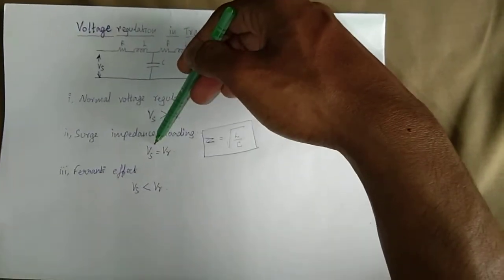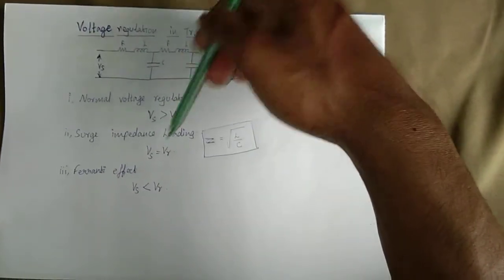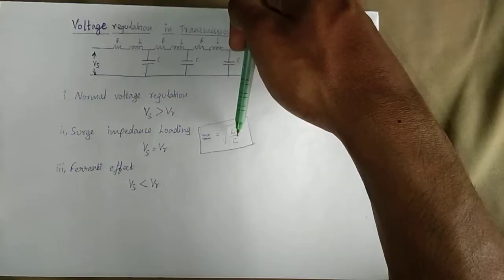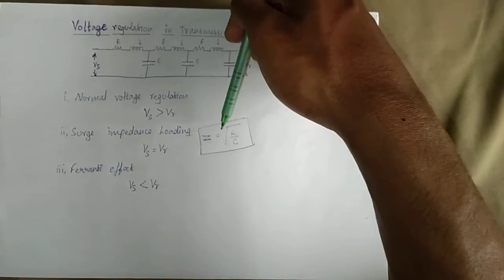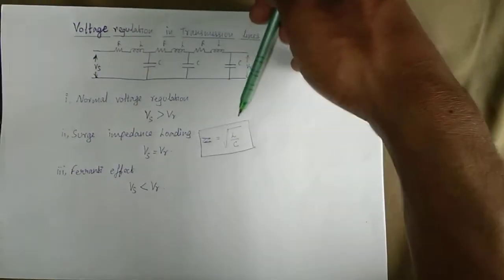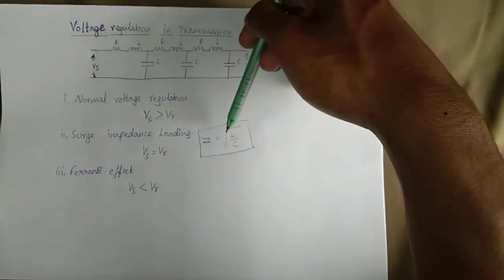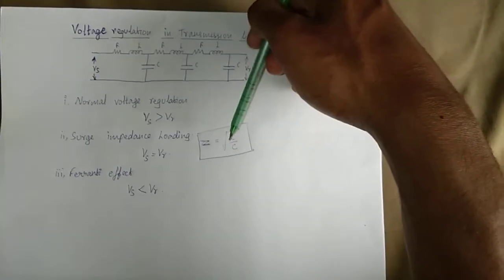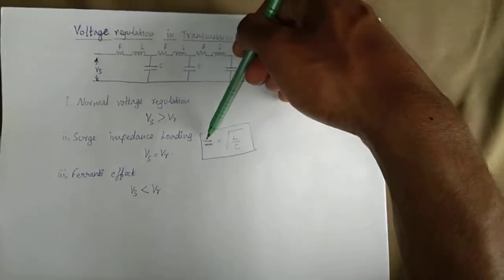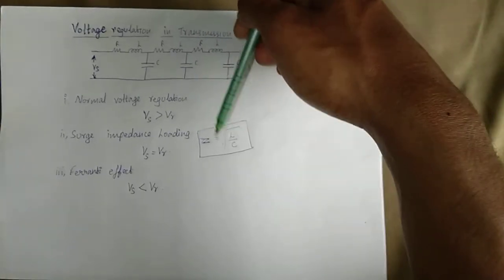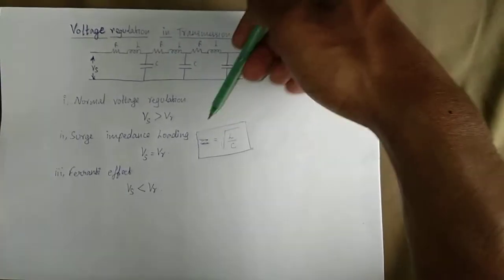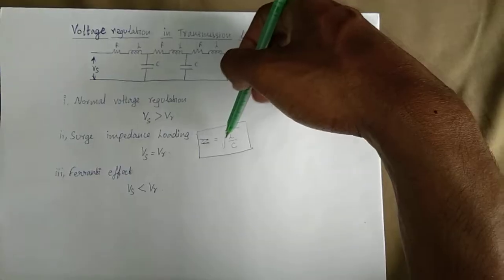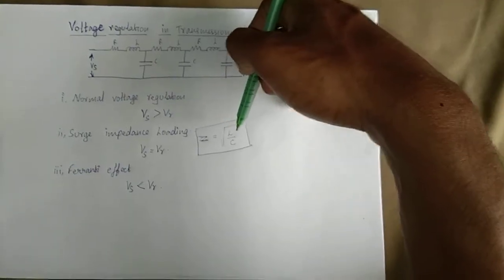This is called Surge Impedance Loading, where the Inductor power equals I²XL and the Capacitor power equals V²/XC. The expression for surge impedance is Z equals root of L by C. The unit is Ohms.